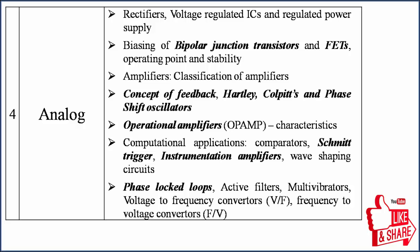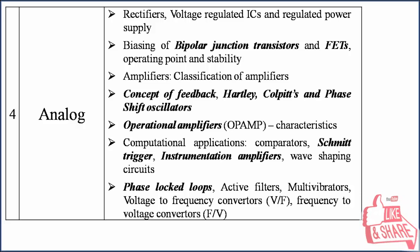In analog, you should go through what are diodes, BJTs, FETs, and feedback. You have two types of feedback: positive feedback and negative feedback. Positive feedback is used in oscillators; negative feedback is used in amplifiers.